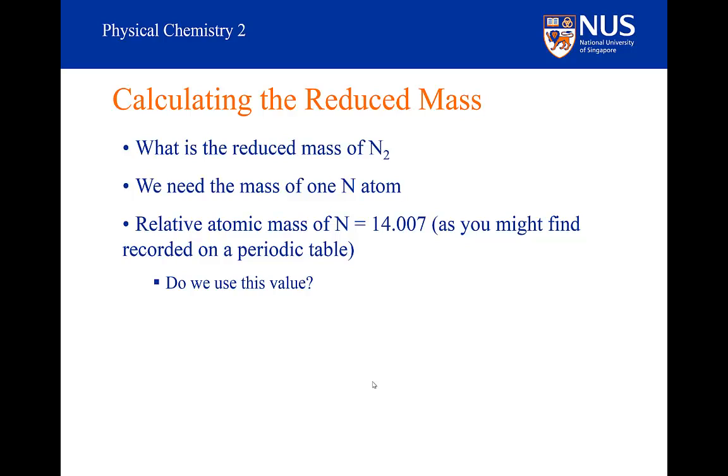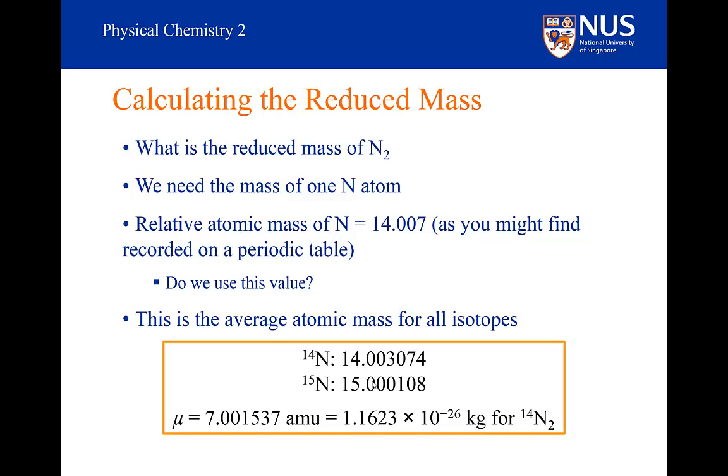We saw before what happens when we have carbon-12 and carbon-13 monoxide. They gave rise to overlapping spectra. They didn't lead to an average spectrum. This means that we have to use the isotopic mass, not the relative mass of all isotopes, because this is an average in terms of the relative abundances of the isotopes. So if we have nitrogen-14, we would use 14.003. And if it was nitrogen-15, it's 15.000.